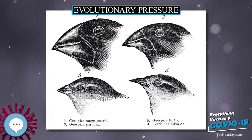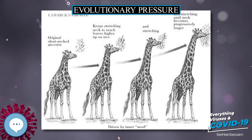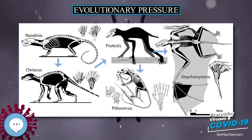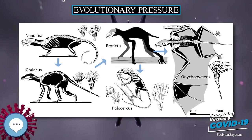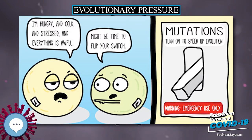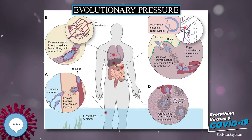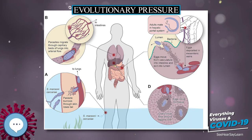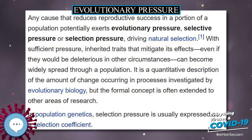Evolutionary pressure — any cause that reduces reproductive success in a portion of a population — potentially exerts evolutionary pressure, also called selective pressure or selection pressure, driving natural selection. With sufficient pressure, inherited traits that mitigate its effects, even if they would be deleterious in other circumstances, can become widely spread through a population. It is a quantitative description of the amount of change occurring in processes investigated by evolutionary biology, but the formal concept is often extended to other areas of research.